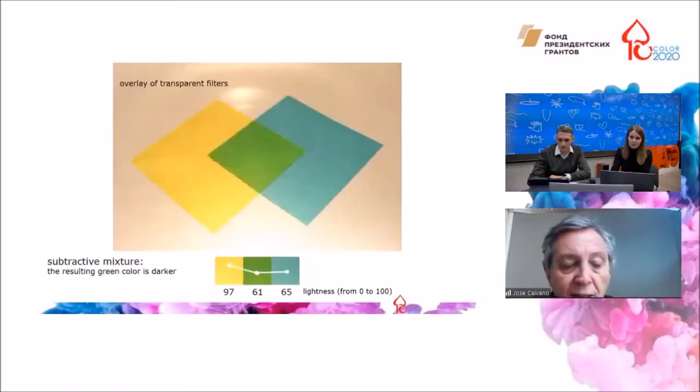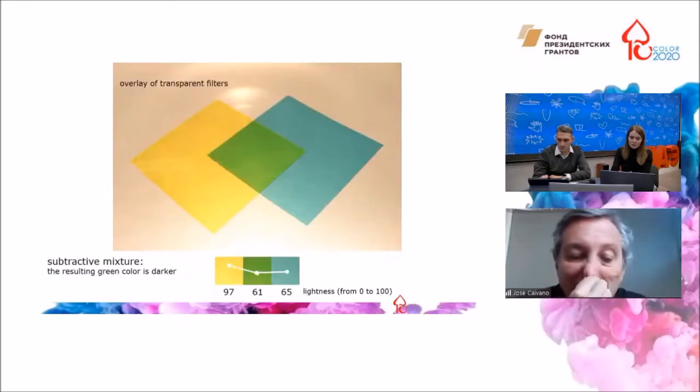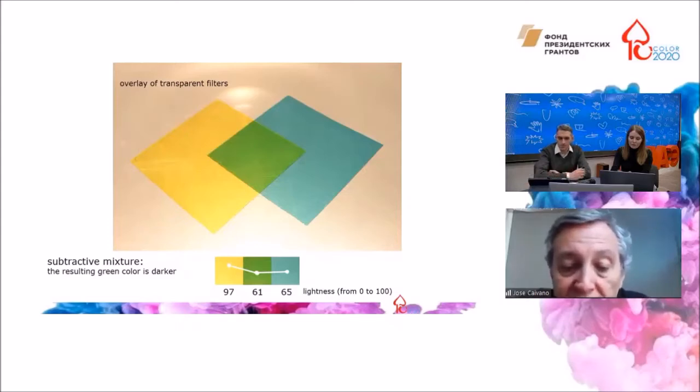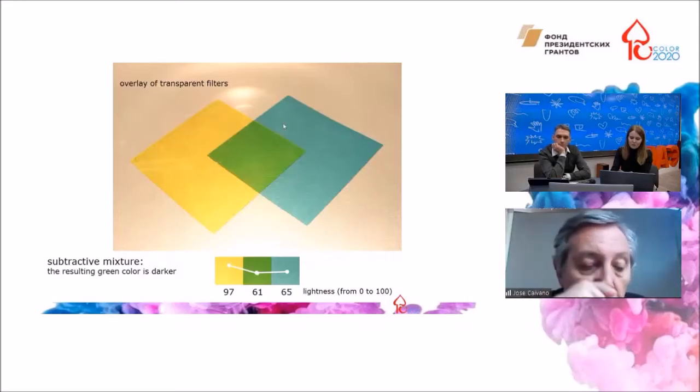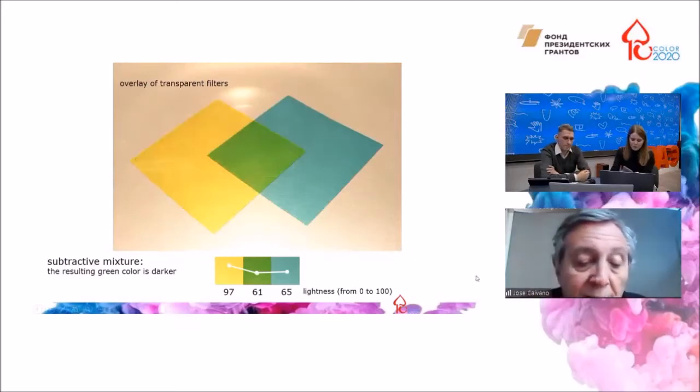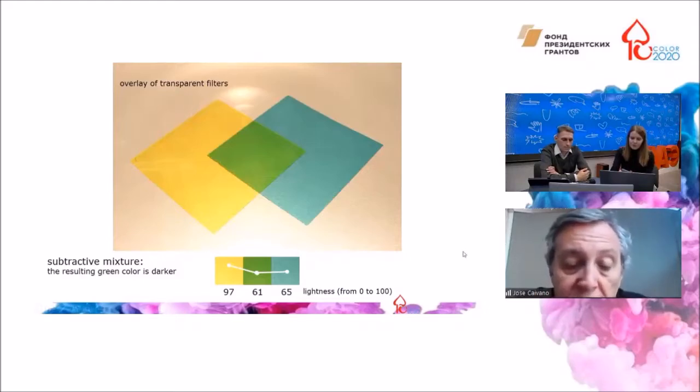But if instead of superimposing layers of perfectly transparent color films, they are somehow translucent, the result approximates a partitive mixture. Note that the green color in the middle is still a little bit darker, but it's closer in lightness to the cyan layer. With an increasing degree of translucency, we will obtain a lighter green color that will stand intermediate between yellow and cyan.